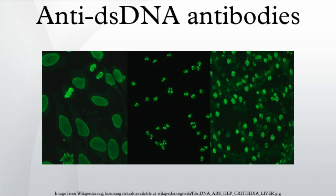Anti-dsDNA antibodies are incredibly specific for SLE, with studies quoting nearly 100%, and are therefore used in the diagnosis of SLE. Higher titers of anti-dsDNA antibodies are more suggestive of SLE, and lower titers can be found in people without the disease. In contrast to the high specificity, estimates of 25 to 85% have been observed for the sensitivity of anti-dsDNA in SLE. Therefore, presence of anti-dsDNA antibodies is suggestive of SLE; however, an absence of the antibodies does not rule out the disease.